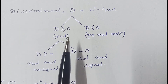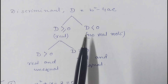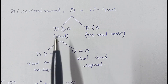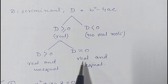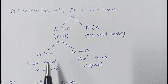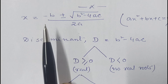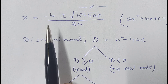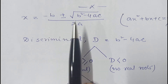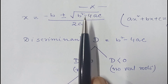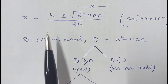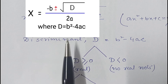So after calculating the discriminant, we can check whether roots exist. If D < 0, no real roots. If D ≥ 0, real roots exist. If D = 0, roots are real and equal. If D > 0, roots are real and unequal. From Sridhar Acharya's rule, for any equation ax² + bx + c = 0, we can write x = (−b ± √D) / 2a.